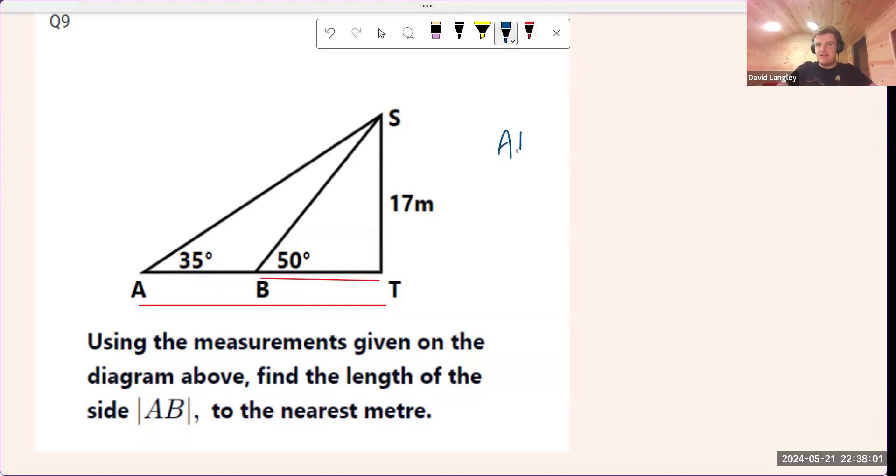How would we find AT? Well, we're going to use sine, cos, and tan, and we're going to label our sides. In terms of this angle, the hypotenuse is going to be this one over here, which we don't really care about. This is going to be opposite, and this side here is going to be adjacent. So we care about opposite and adjacent. TOA, we're going to use tan.